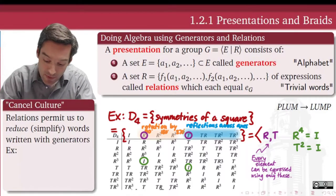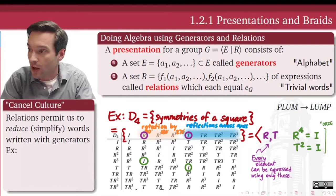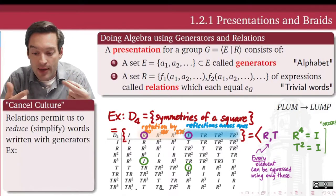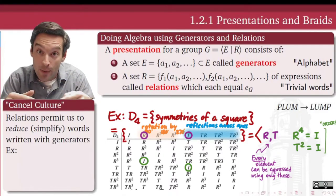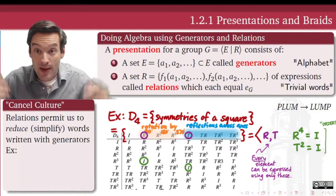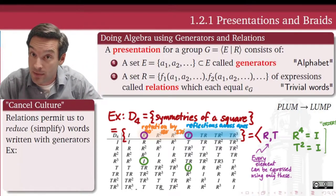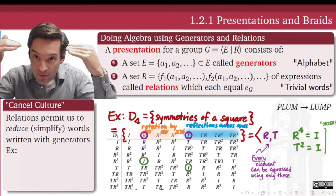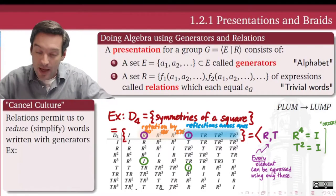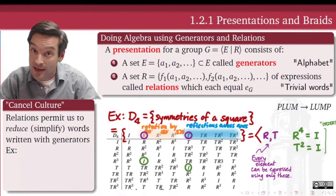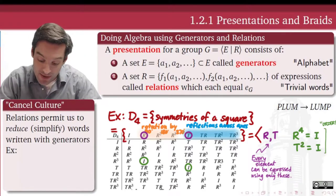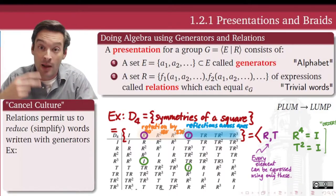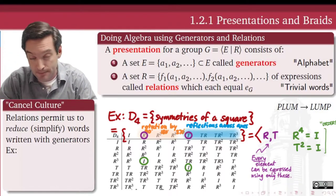These types of relations I like to call order relations. They tell me how an element's powers interact with itself, and therefore with the identity — how many powers of a generator I need before I come back around to the identity. In this case, it happens after four powers for R and after two powers for T.